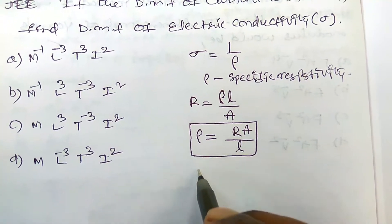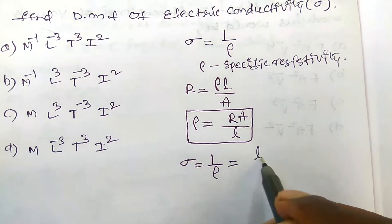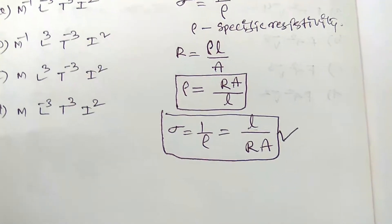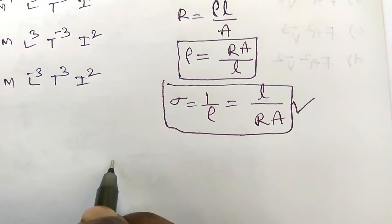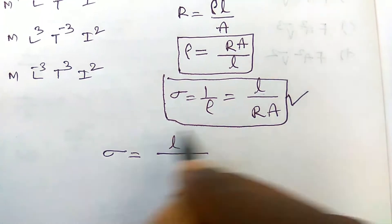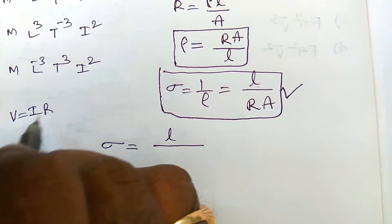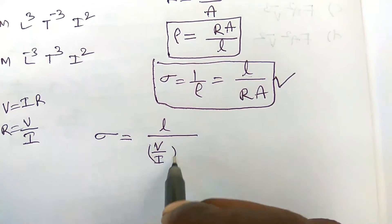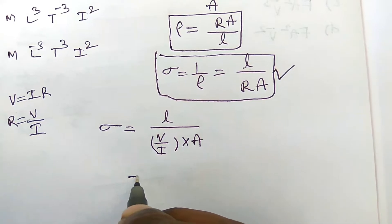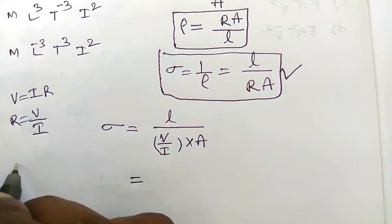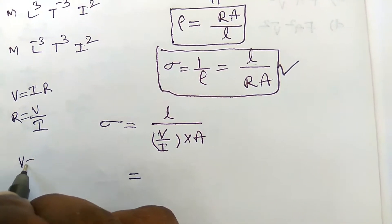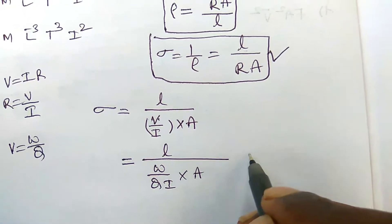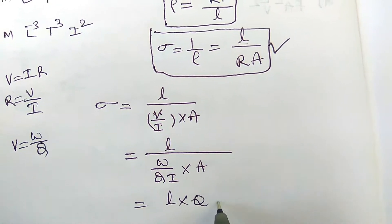Electrical conductivity is the reciprocal of specific resistivity: σ = 1/ρ. This is a Class 12 topic. From resistivity: R = ρ·L/A, so ρ = R·A/L. Therefore σ = 1/ρ = L/(R·A). Now we need to find the dimensional formula for this expression.